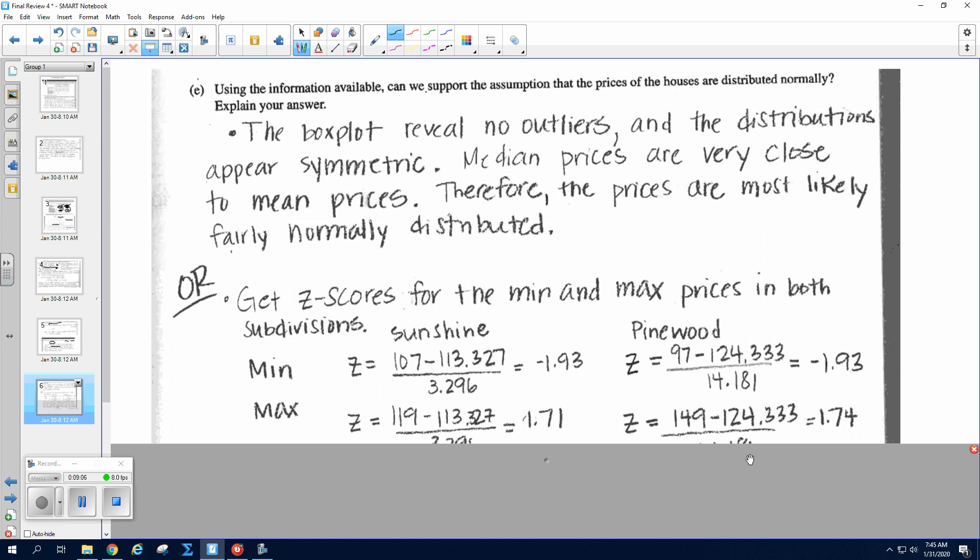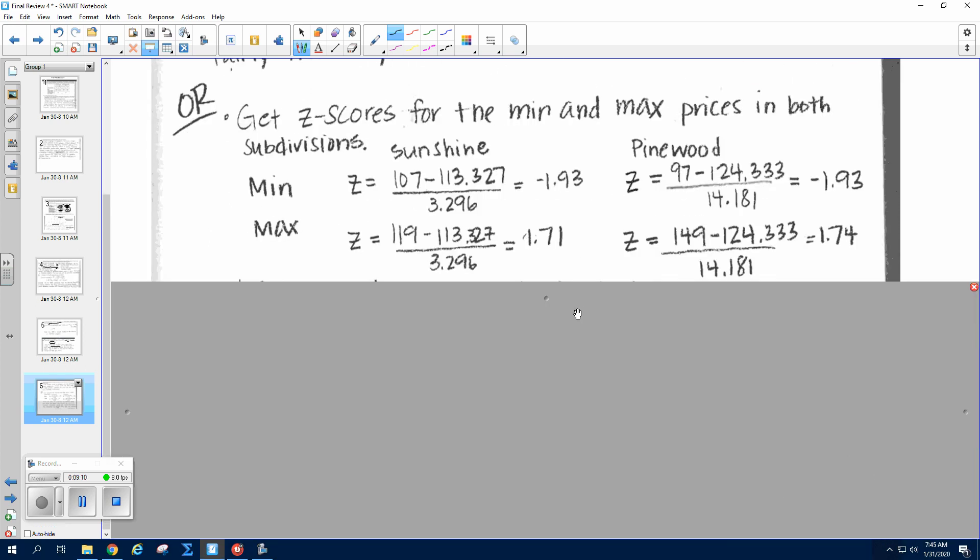Okay, another thing you could do is actually calculate the mins and the maxes. You get a z-score for the mins and the maxes. So the min for Sunshine Estates was 107, and you do the data point minus the mean divided by the standard deviation. And the max is 119, so same thing: minus the mean divided by the standard deviation. And we get numbers close to -2 and +2. Do the same thing for Pinewood, and we get numbers close to -2 and +2.